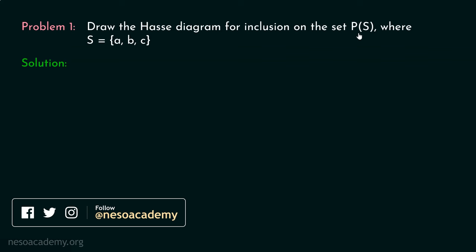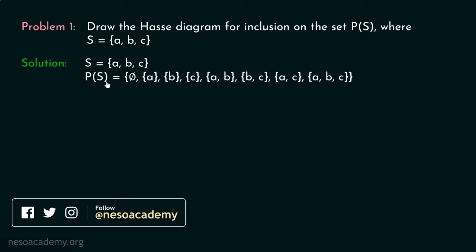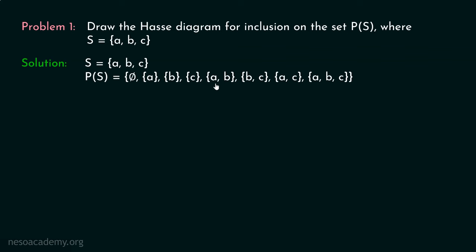Let me list down all the elements of the power set of set S. Here we have a total of eight elements. The first element is the empty set phi. Then we have sets with one element: {A}, {B}, and {C}. Then we have sets with two elements: {A,B}, {B,C}, {A,C}. And finally, we have the set with three elements {A,B,C}. Power set of S consists of 2³ = 8 elements.